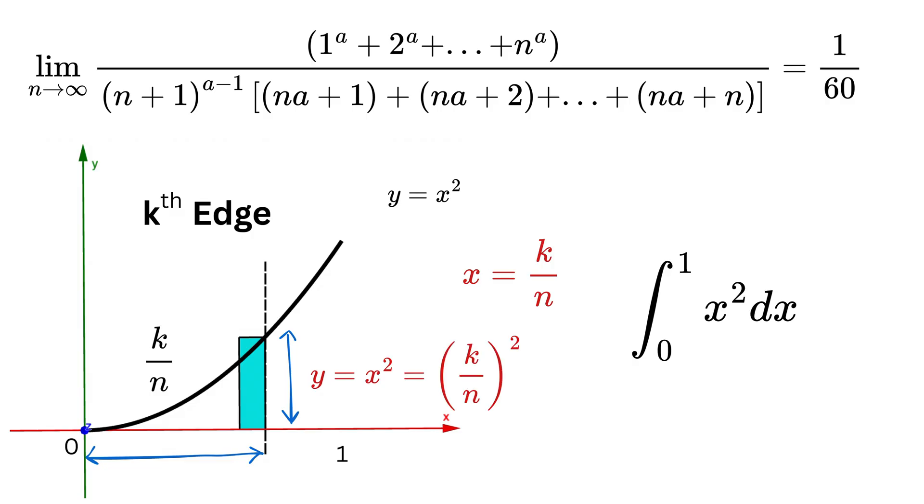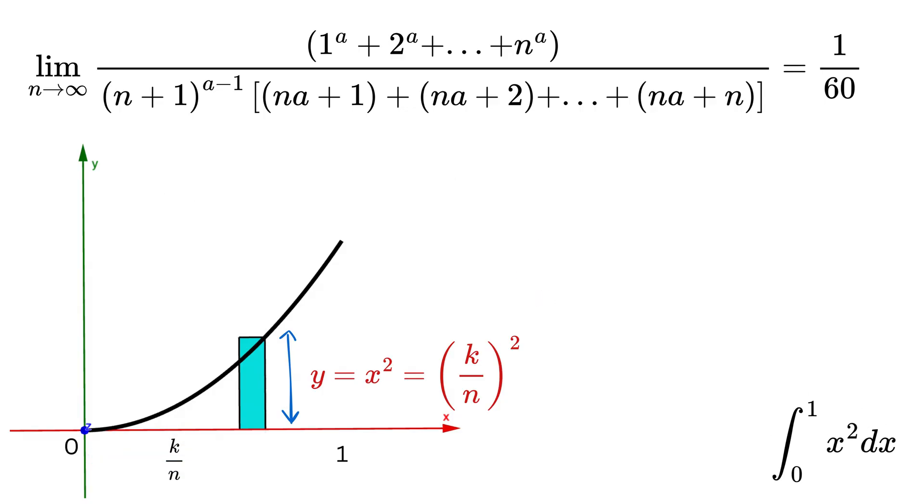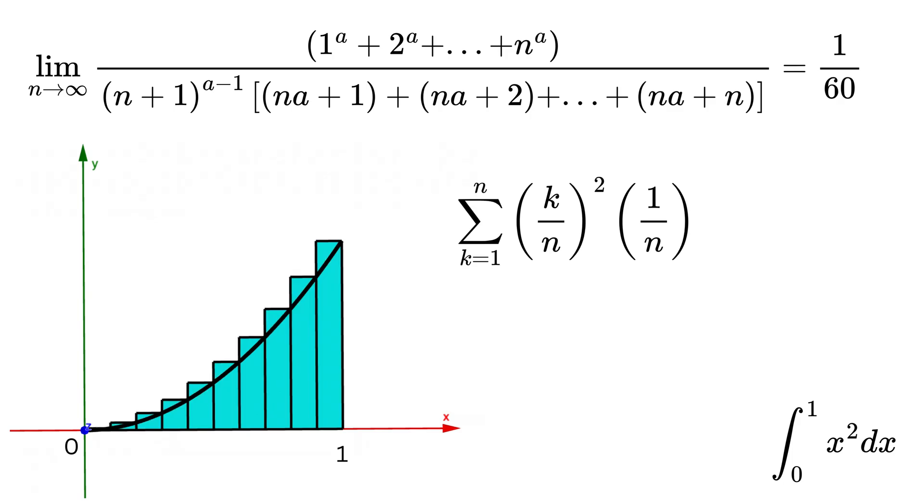And thus this y value will be equal to x squared or k divided by n whole squared. Now the area of this kth rectangle is its height times its width, so this rectangle area is k divided by n whole squared multiplied by 1 divided by n. Then add up all these little rectangle areas from k equals 1 to n.